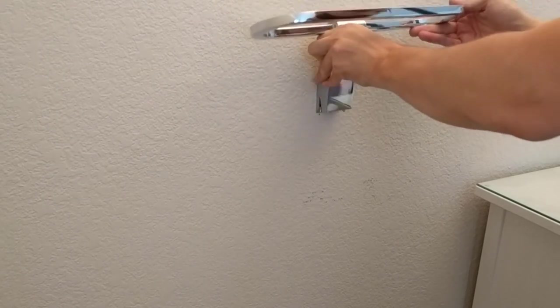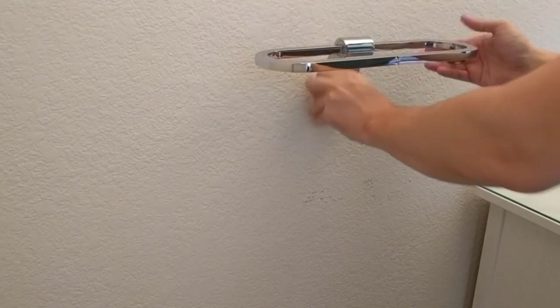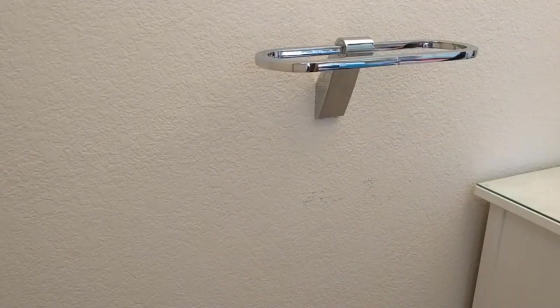Next, we will secure the bar to the mounting plate. Place your Tinker Towel Bar over the mounting plate and tighten the two hex screws until just snug.